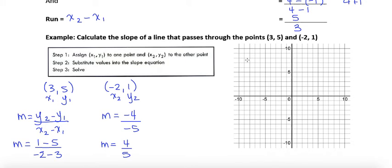So let's just verify that by plotting those points. You don't always need to verify it, but if you have a graph available to you, it's helpful to do that. So I'm going to plot my points 3, 5. I'm going to go across to 3 and up to 5. And my point 2 I said was negative 2 and 1.